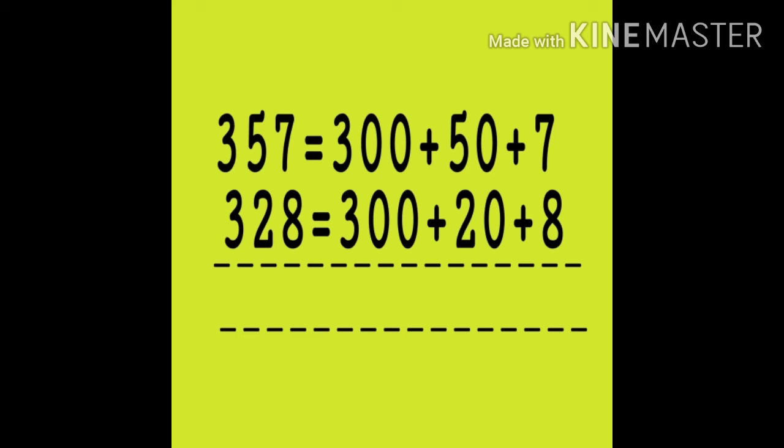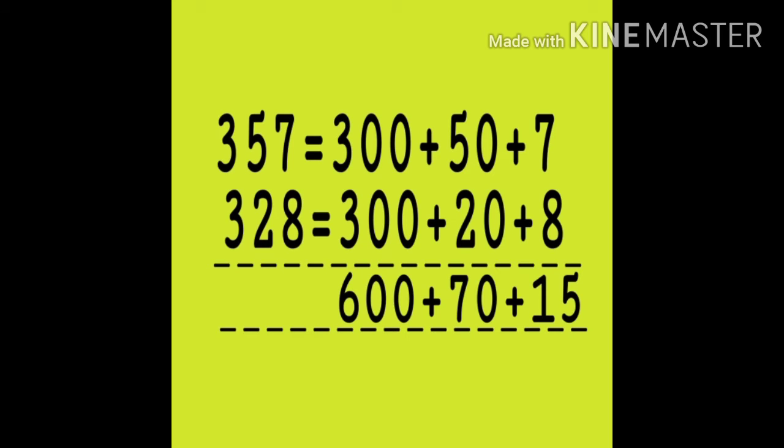So let's start adding up these numbers. First of all, we will add the ones digit: 7 plus 8 equals to 15. Then let's come to the tens digit: 50 plus 20. 5 plus 2 equals to 7, so 50 plus 20 equals to 70.